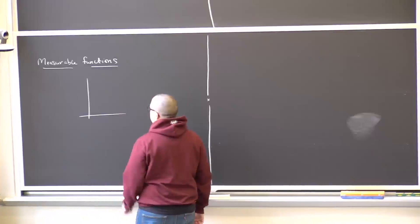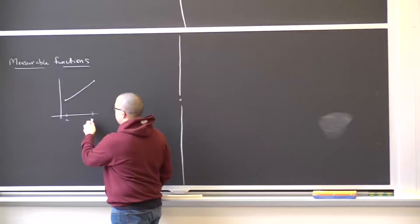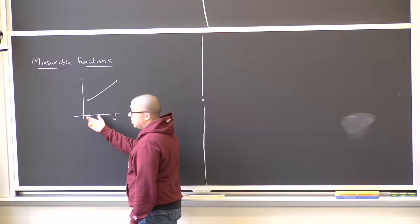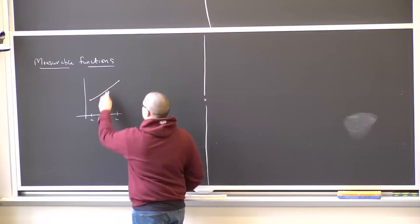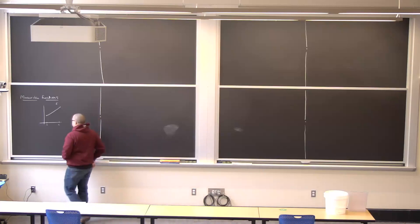To motivate the definition of a measurable function, let me give a few minutes on why we introduced this definition. Historically, when Lebesgue thought of his theory of integration, if we had a function on a closed interval [a, b] — say an increasing function — what Riemann does is partition up [a, b], form boxes with width given by the sub-intervals and height given by f evaluated at some point, form a Riemann sum, take a limit, and that gives the Riemann integral.